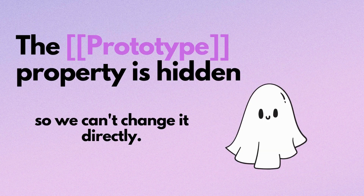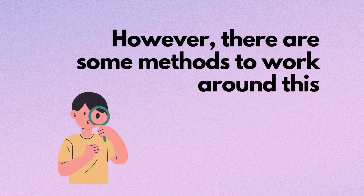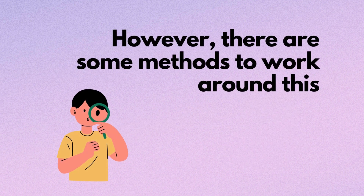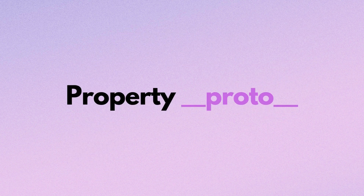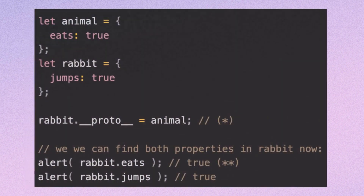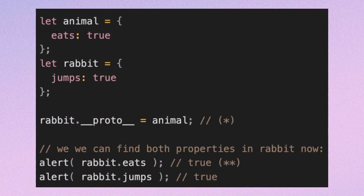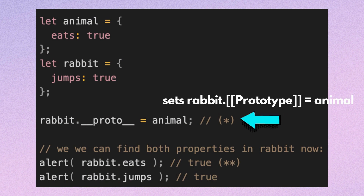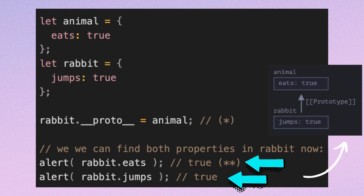The prototype property is hidden, so we can't change it directly. However, there are some methods to work around this. One of them is __proto__. Here is an example of how it works. Here we assign prototype for rabbit using __proto__, and now we can find both properties in rabbit, because JavaScript follows the prototype property reference.